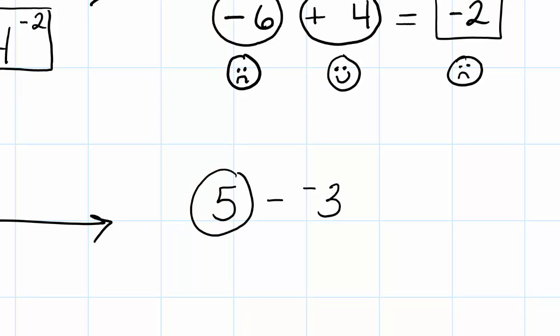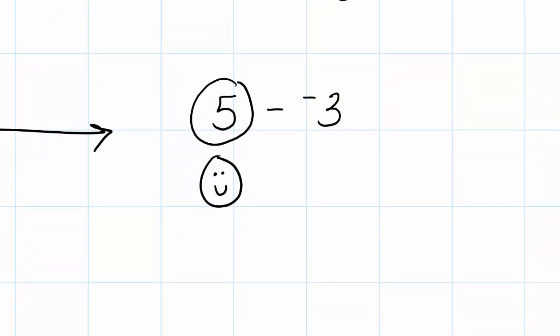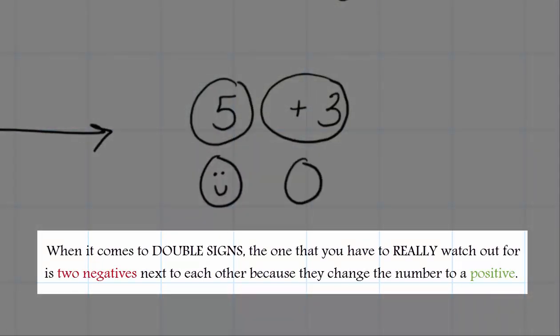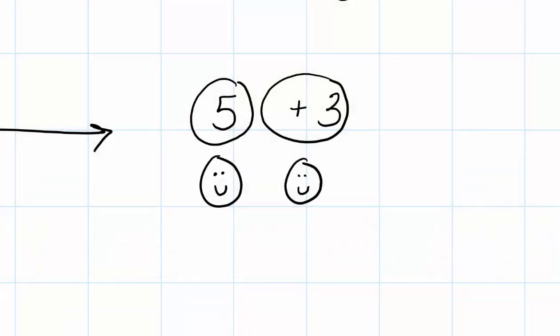And what we really need to watch out for here is the two negative signs that are in front of the number 3. The 5 by itself, that's a positive. We know that. But two negative signs, when it comes to our integer rules, ends up making this number a positive. And so what we learn here, and when we always watch out for those negative signs, the double negatives always are going to form a positive. If you have a negative sign and a positive sign together, it's going to be negative. But the only time that we're going to change a number and make it positive is when we have two negative signs next to each other.